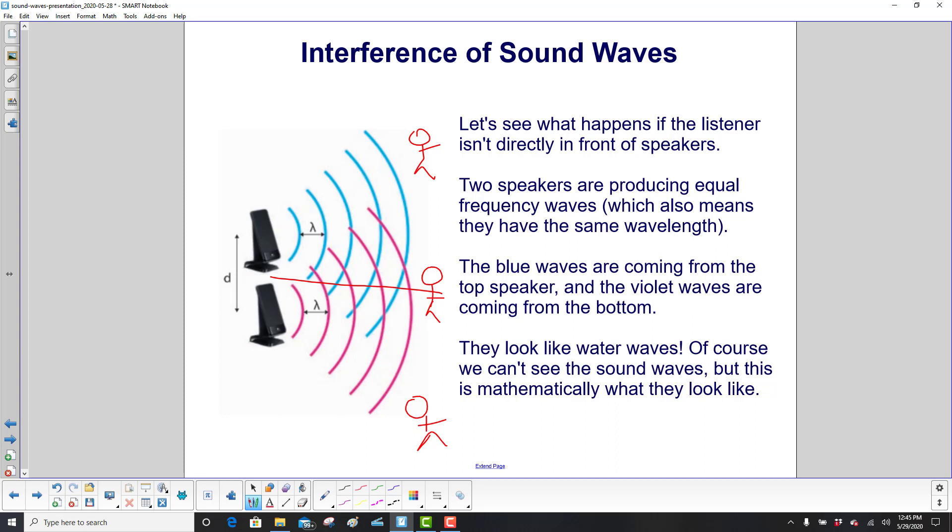Now we have to look at what the sound waves look like, or at least what we can represent them. They both produce equal frequency waves, which means they have the same wavelength. The blue waves are coming from the top speaker and the violet waves are coming from the bottom. What does this look like? We actually did this in the last chapter.